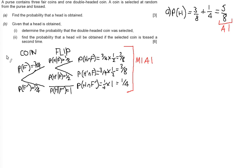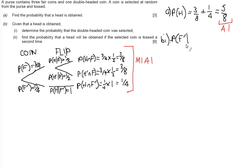For part B, we start to really deal with conditional probability using Bayes' theorem — finding the probability of having picked a fair or unfair coin given whether we flipped a head. Part B asks us to determine the probability that the double-headed coin was selected, given that a head was obtained. This is P(F complement | Head), which equals P(Head ∩ unfair coin) divided by P(Head).